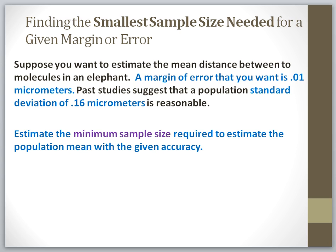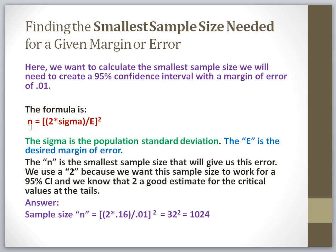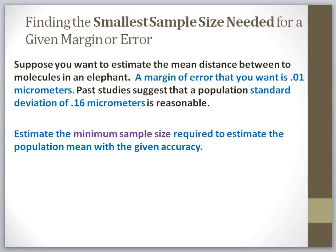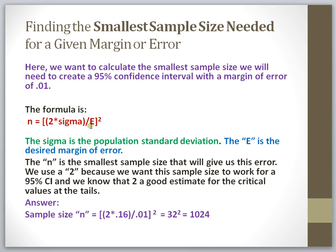The good news is there's a formula for this. We can estimate the sample size that we need using this basic formula: we're going to multiply 2 times the population standard deviation sigma, divide that by the margin of error that we need, and square it. In our particular case, the minimum sample size can be estimated by 2 times 0.16 divided by 0.01. So 2 times 0.16 divided by 0.01 is 32, and then we square that value to get 1024.